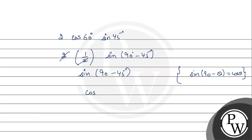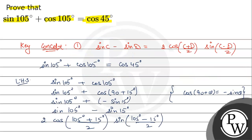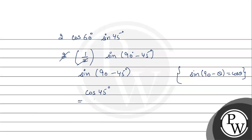From here, it is equal to cos 45 degree. The right hand side was also cos 45 degree. So left hand side equals right hand side. Question proof ho gaya. I hope you all understand it well. Best of luck.